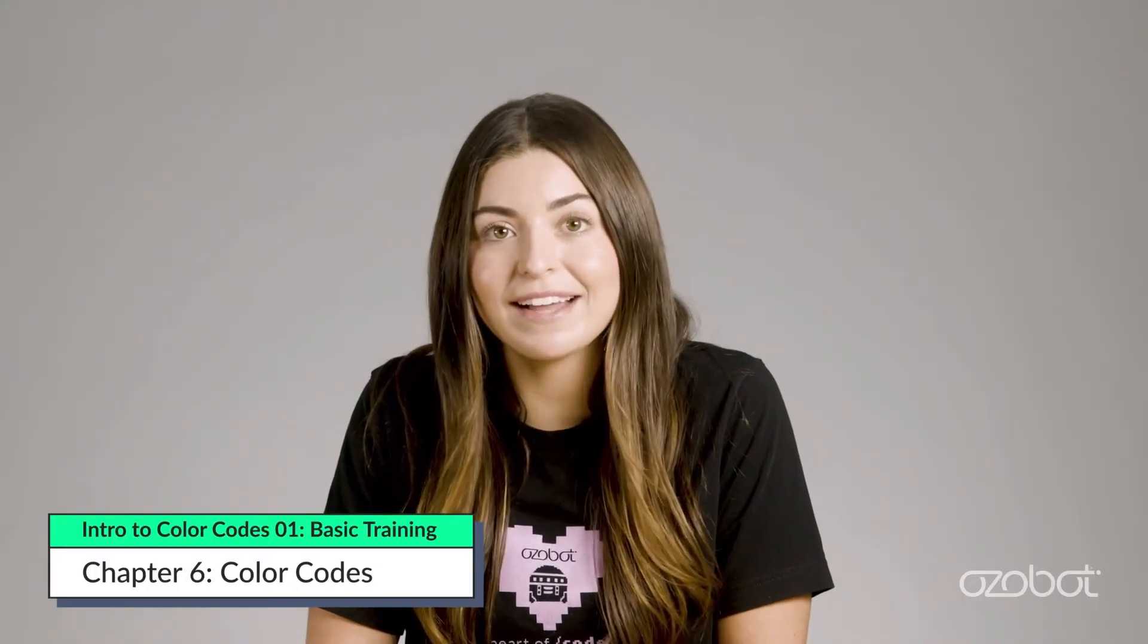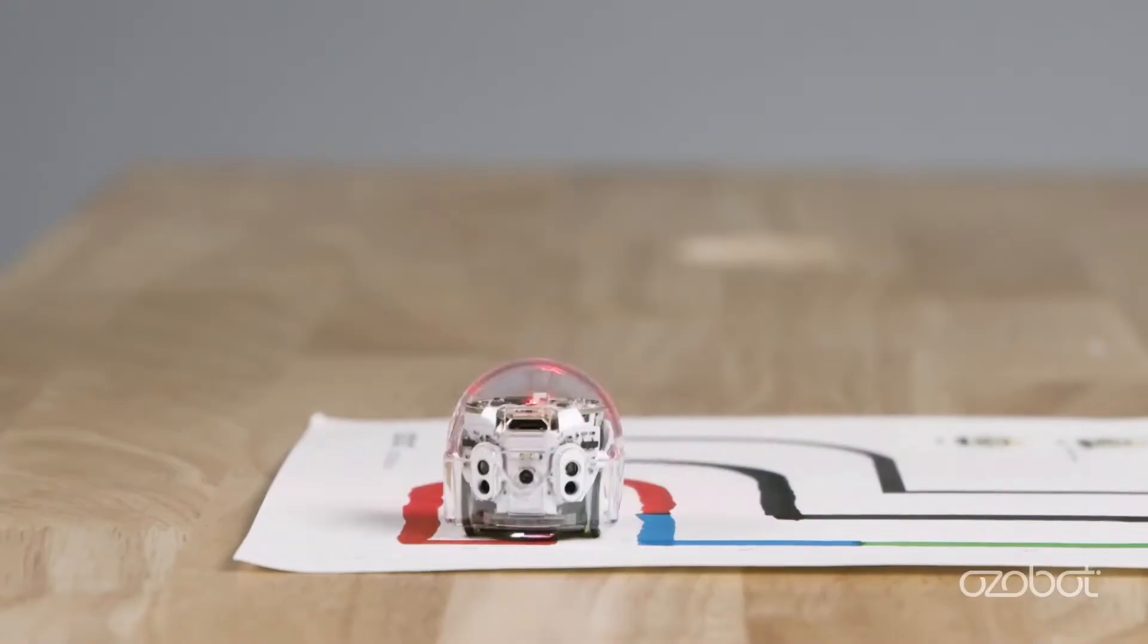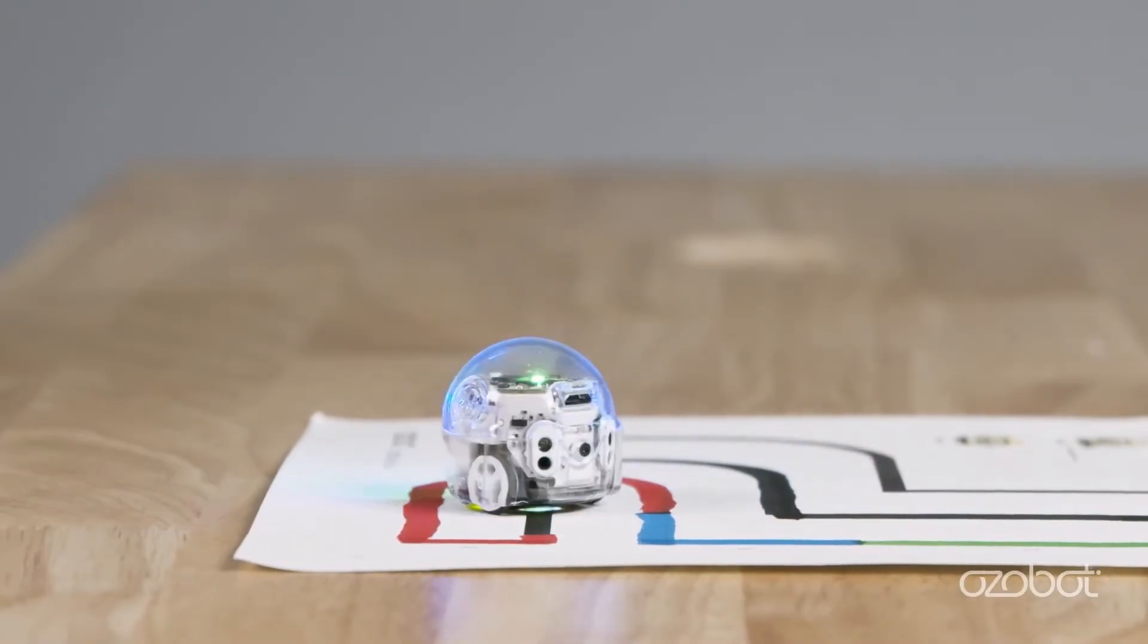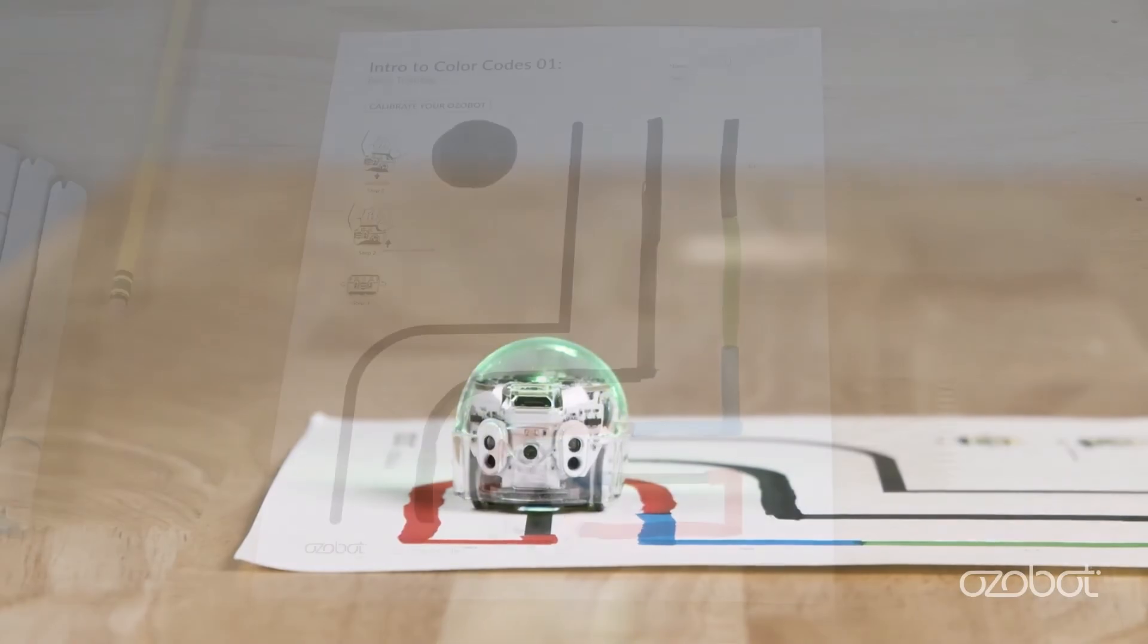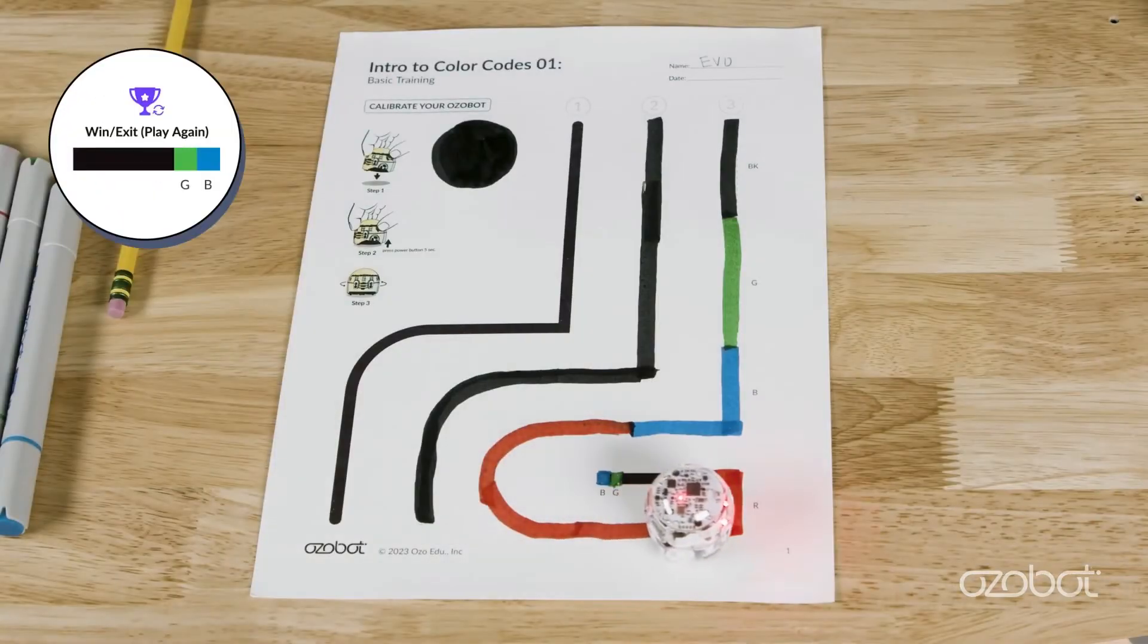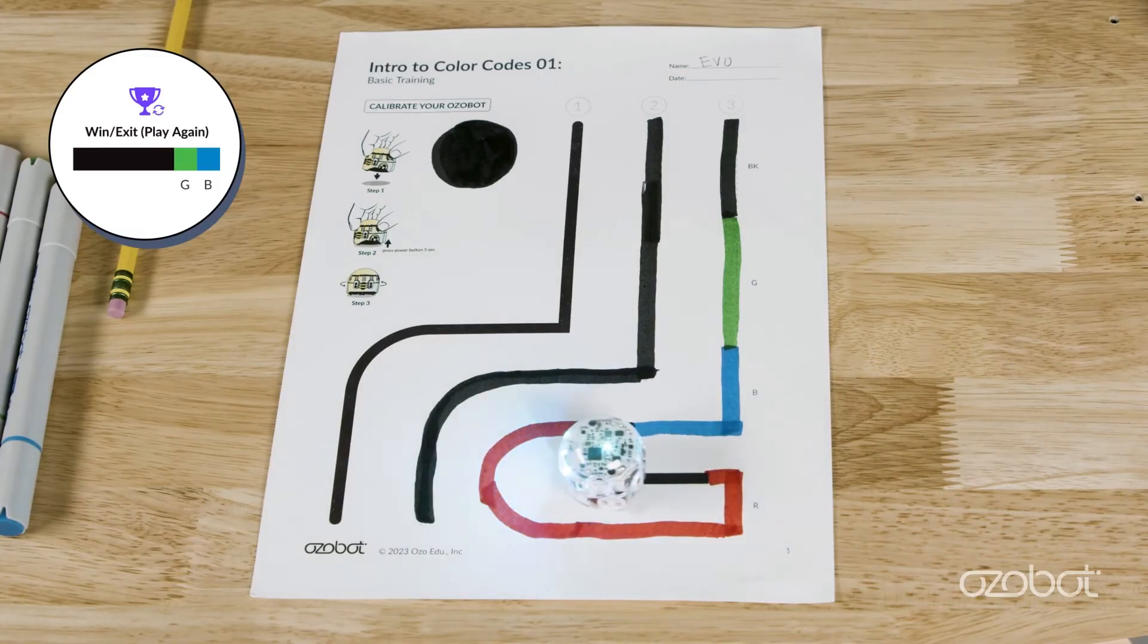A color code is a group of colored blocks found along a black line that programs Ozobot to perform certain actions. Ozobot did a little dance at the end of the last line because the green and the blue blocks at the end of the line are a color code. Your bot is programmed to do a little dance when it sees those two colors together at the end of a line.